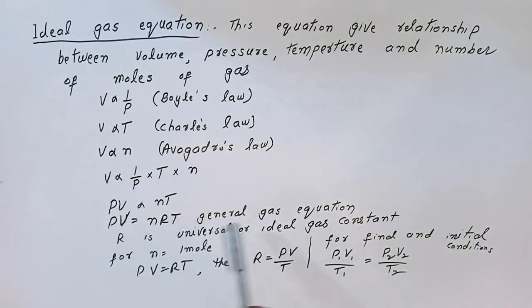PV is equal to nRT is called general gas equation. n is number of moles.